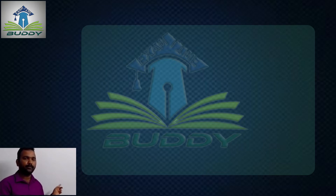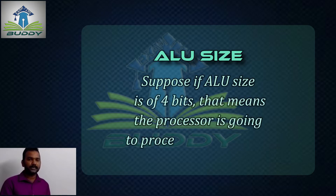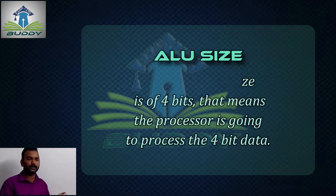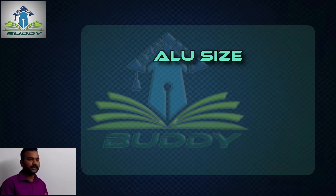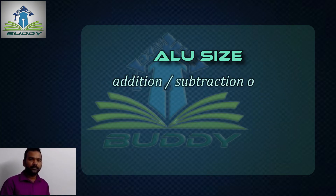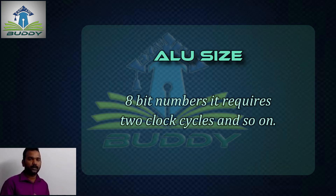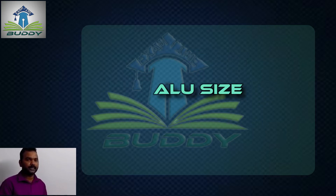Here we need to consider an important point — that is ALU size. What is ALU size? Suppose if the ALU size is 4 bits, that means the processor is going to process 4-bit data. If you want to perform addition of two 4-bit binary numbers, it requires a single clock cycle. If you want to perform addition or subtraction of two 8-bit numbers, it requires 2 clock cycles, and so on.